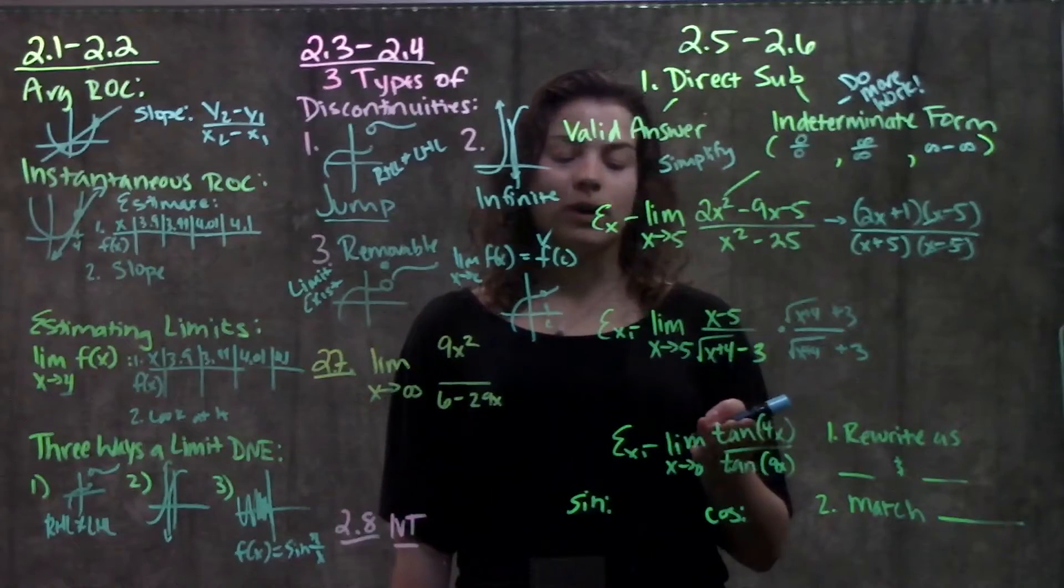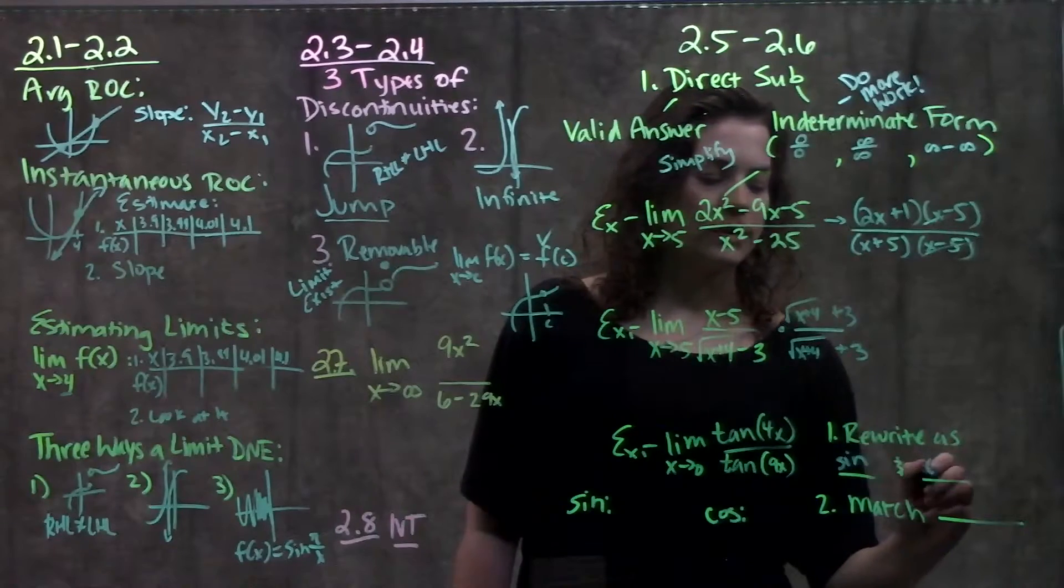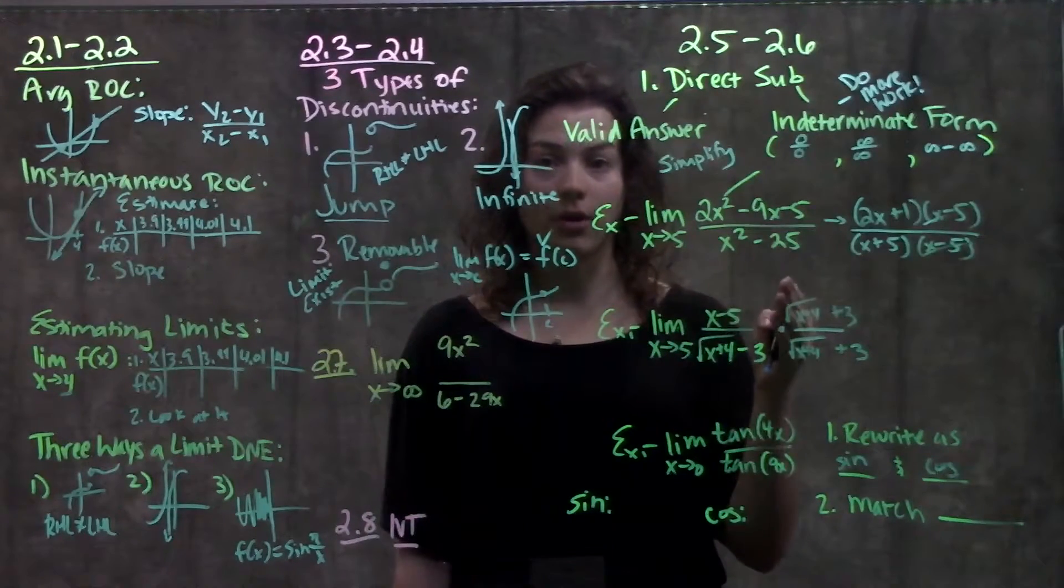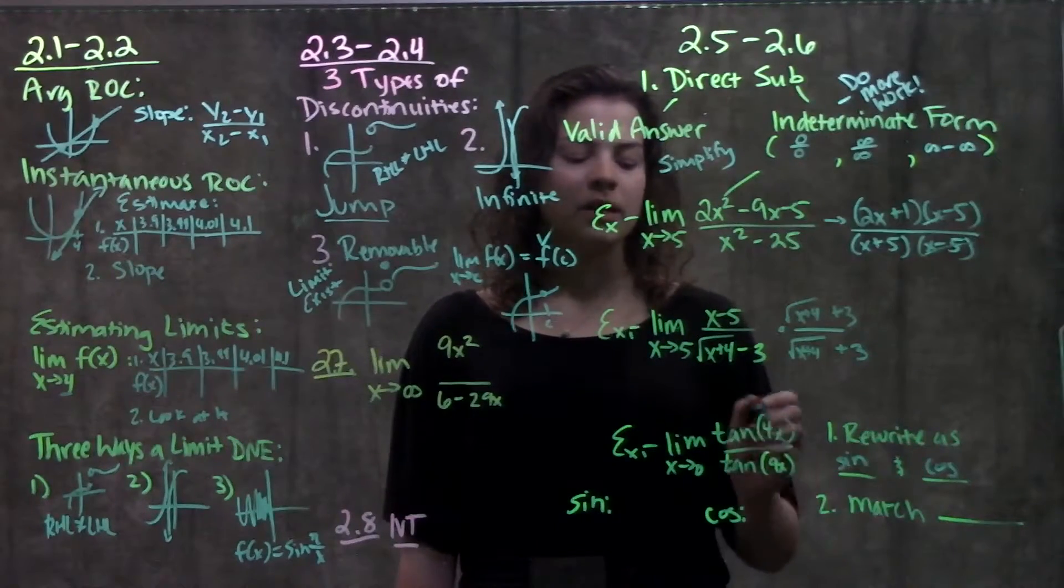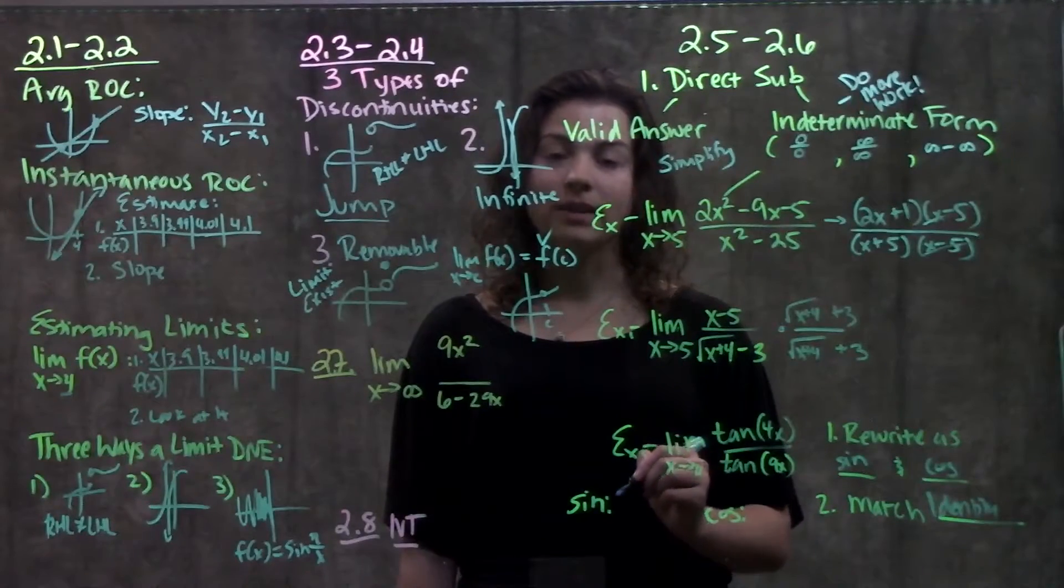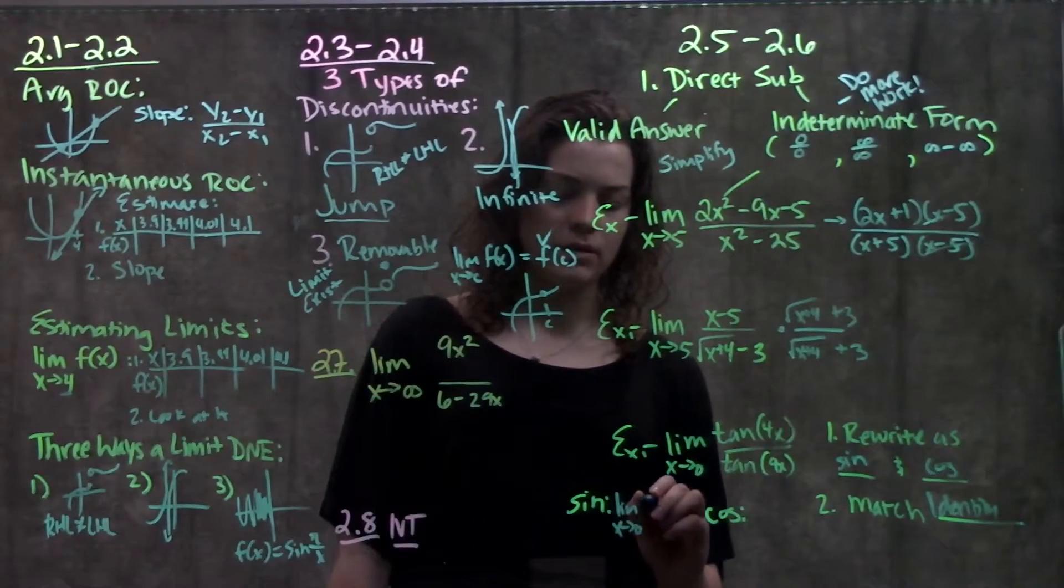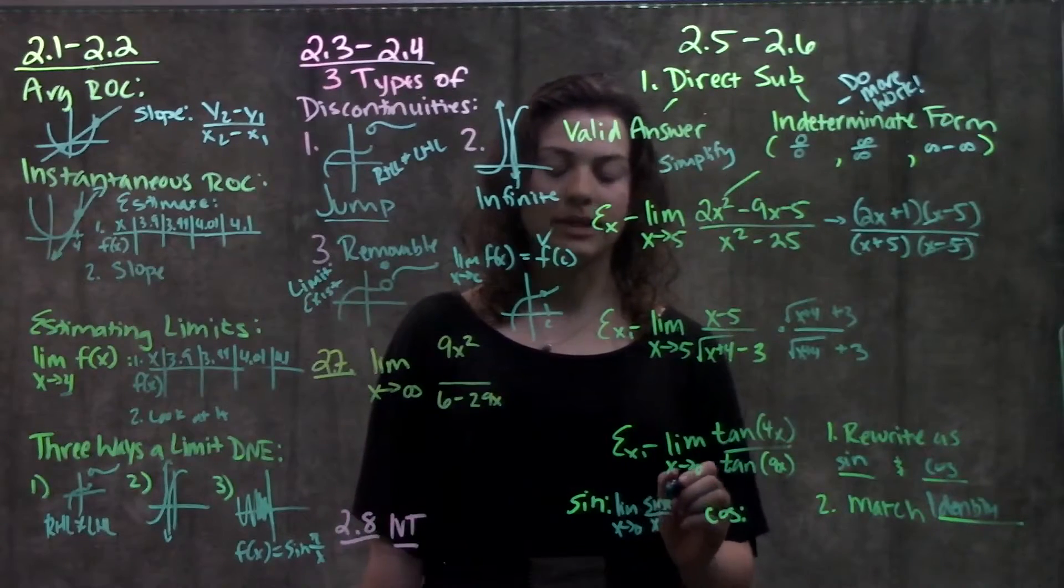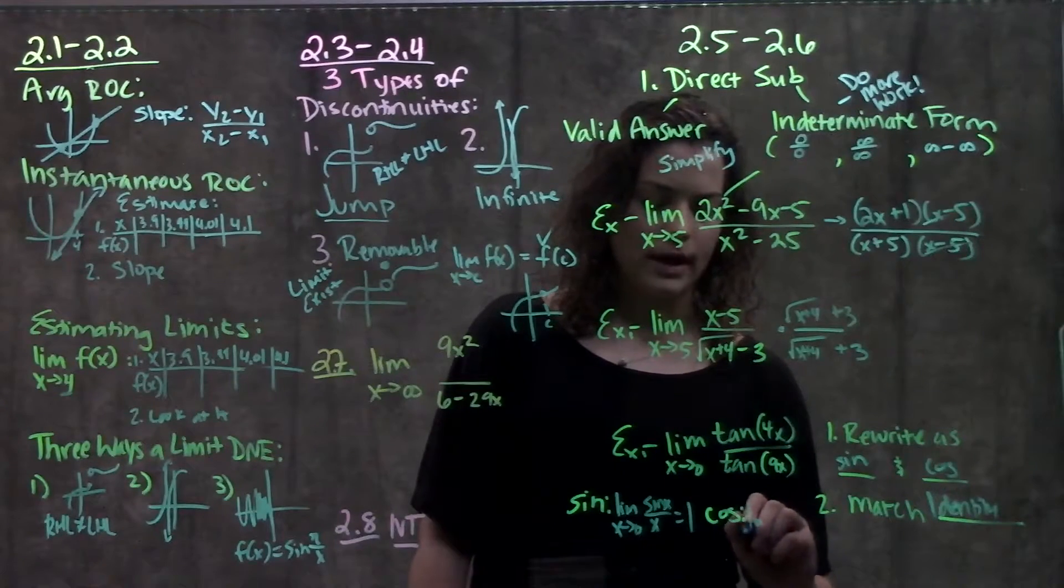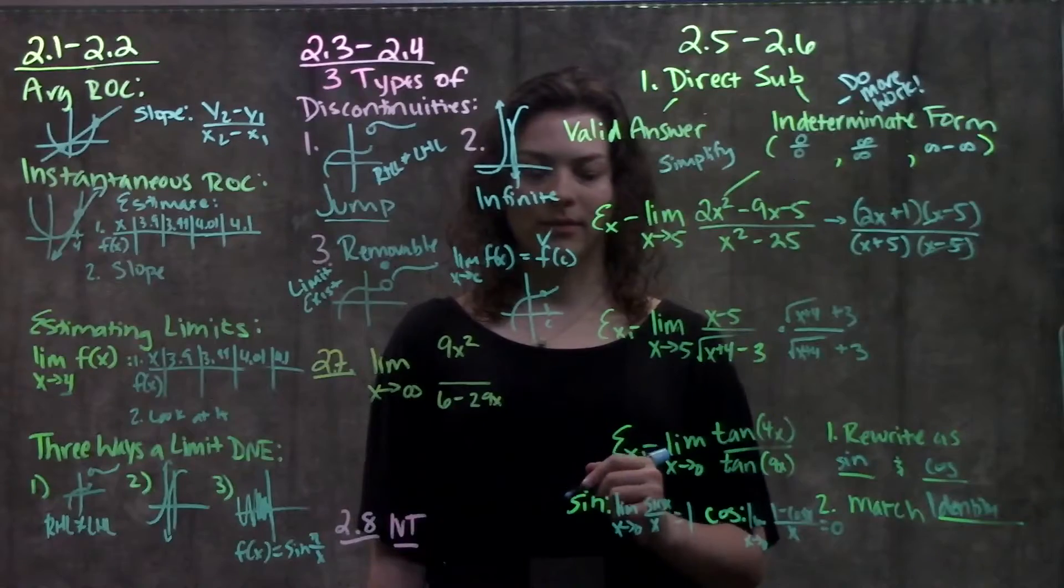Next type of function that we see a lot of times is one involving trig. For trig, our first step for these types of limits is we want to rewrite it in terms of just sine and cosine. For example, here if I had tangent, I could rewrite tan 4x as sine 4x over cosine 4x. So I rewrite this function in terms of just sine and cosine, simplify it a little bit. Step 2, I want to get it to match an identity. If you remember in section 2.6, there were two identities we learned, one for sine and one for cosine. Our sine identity told us that the limit as x approaches 0 of sine x over x, and remember this doesn't have to be just x here, it could be sine something over that same something, is equal to 1. For cosine, our limit was the limit as x approaches 0 of 1 minus cosine x, or cosine anything, over that same anything, is equal to 0.